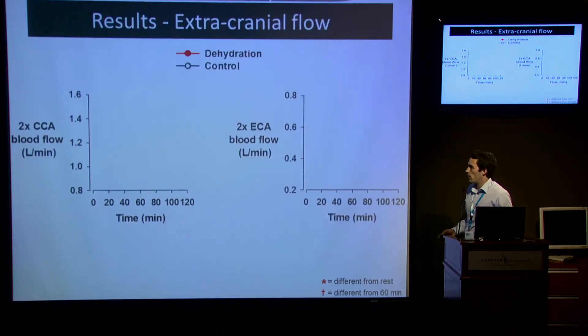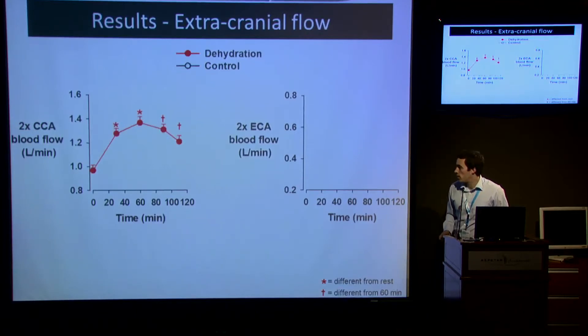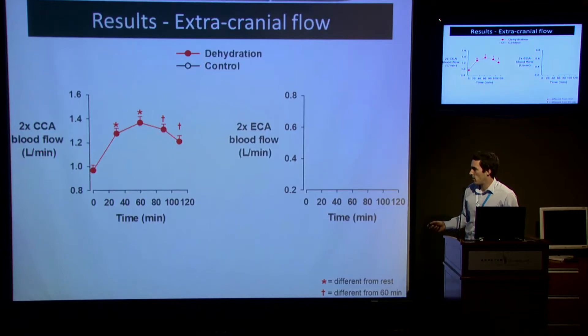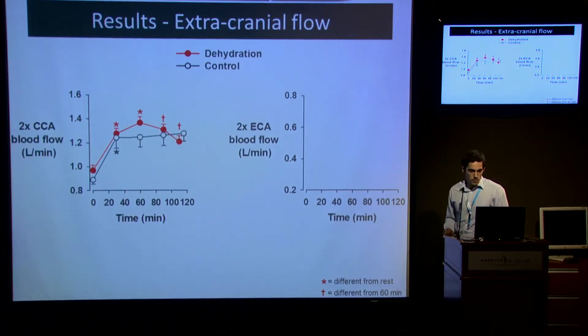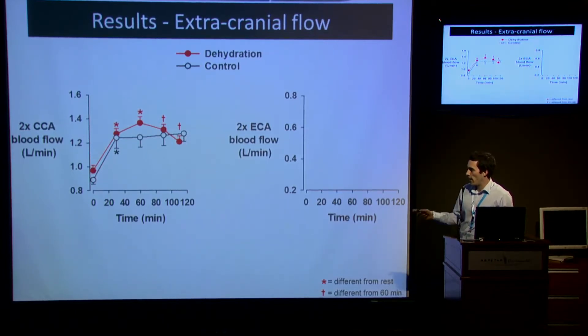What about our regional blood flow? We measured two times common carotid artery and two times external carotid artery blood flow. In the dehydration condition, blood flow increased from rest and remained elevated through exercise, although it was significantly declining from around the 60-minute mark. In our control condition, blood flow increased up to 30 minutes and then remained fairly stable, and that was in line with our core temperature measurement. Core temperatures seem to track the flow response there quite well.